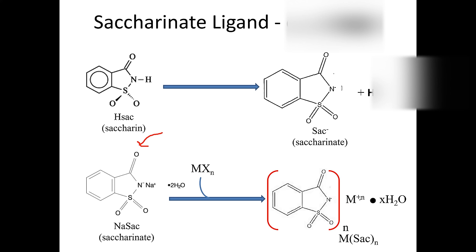The number of saccharinate ions is dependent on the charge of the metal ion. For example, if you have copper 2+, you'll need two saccharinates to balance the charge, because the nitrogen has a negative one charge. If working with iron 3+, you would have three saccharinates around the iron, and the rest of the positions will be filled with water. Remember, each transition metal cation wants six ligands around it. So copper 2+ with two saccharinates means four water molecules. Getting this equation right is critical for determining the limiting reactant.